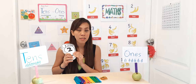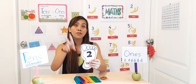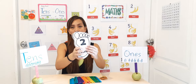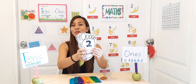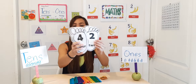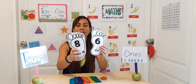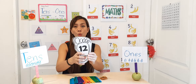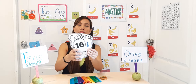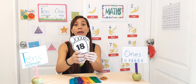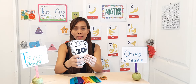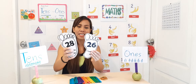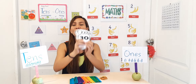I will show you a number. Tell me what number is this? This is 2. So do you still remember? Let's count together by twos: 2, 4, 6, 8, 10, 12, 14, 16, 18, 20, 22, 24, 26, 28, 30. Good job!